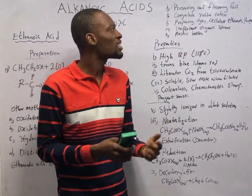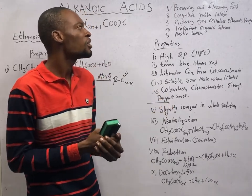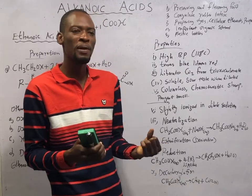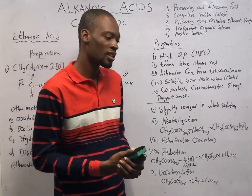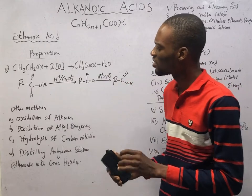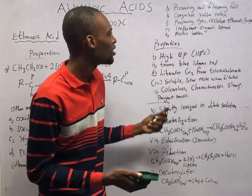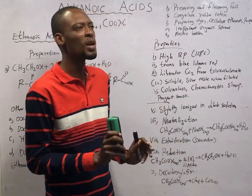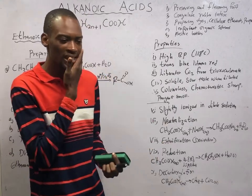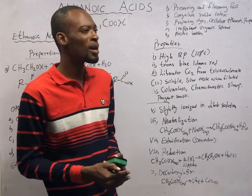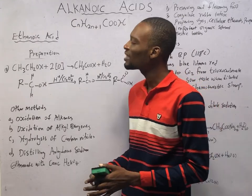Ethanoic acid is used in preserving and flavoring food. It is used to coagulate rubber latex. It is used to prepare dyes, cellulose ethanoates, and propanones. It is used to prepare esters. It is an important organic solvent, and it also finds application in making plastic bottles.